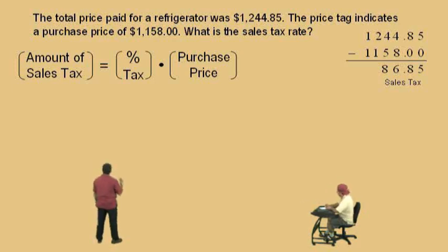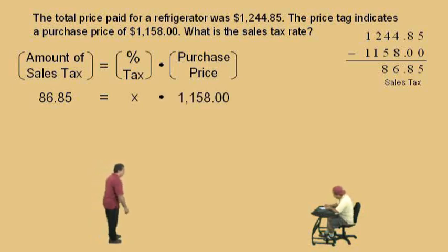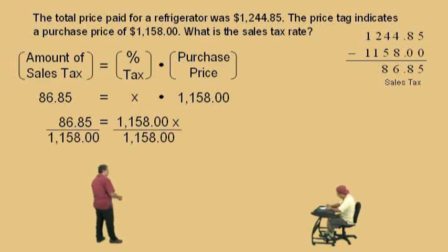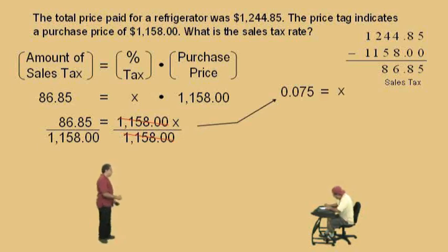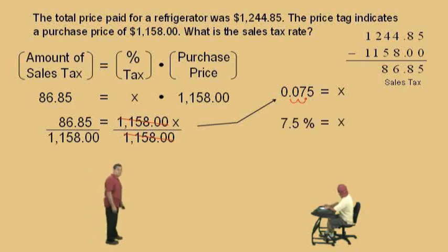Now let's come back to our equation. Our amount of tax is $86.85, and that must equal the percent tax as a decimal — that's what we're trying to find, so that will be our X. And what is our purchase price, Charlie? $1,158. So our equation is 86.85 = 1,158.00X. How do we solve this, Charlie? Divide both sides. It cancels out on the right. On the left-hand side, what's this quotient? 0.075 — and that equals our X. Now how do we change that decimal to a percent? Move two places to the right, and our answer is 7.5%.